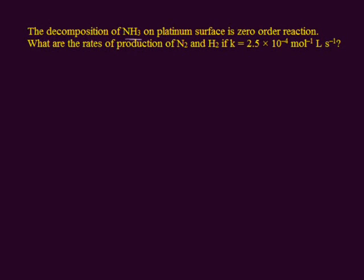The decomposition of ammonia gas on a platinum surface is a zero-order reaction. The question asks what are the rates of production of nitrogen gas and hydrogen gas. When ammonia gas decomposes, it produces nitrogen gas and hydrogen gas. Let us write down the reaction: ammonia gas produces nitrogen gas as well as hydrogen gas.